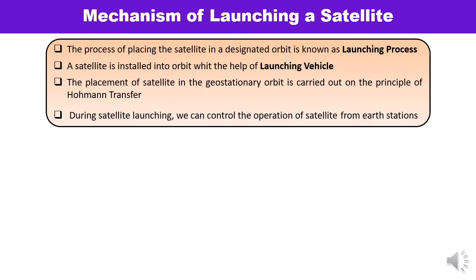Theoretically you can say it is a one-step process, but practically it is not like that. The process of placing the satellite into the designated orbit is known as the launching process, and a satellite is installed in the designated orbit with the help of launching vehicles. Launch vehicles are used to place the satellite, and the placement in geostationary orbit is carried out on the principle of Hohmann transfer.